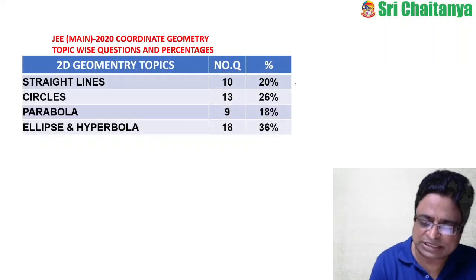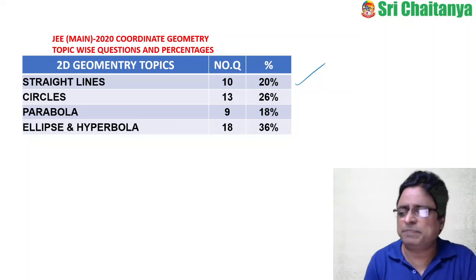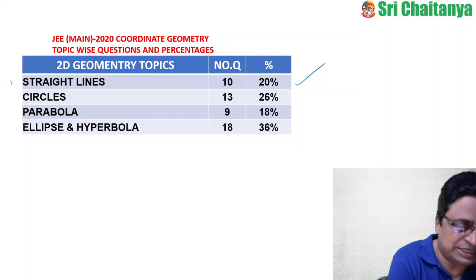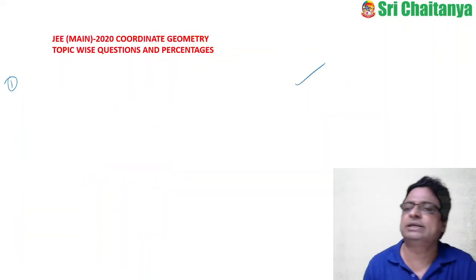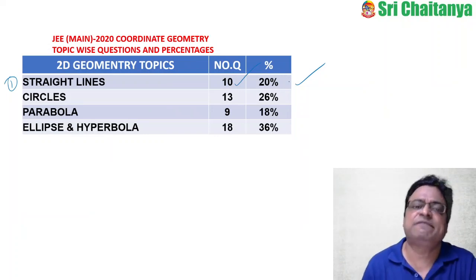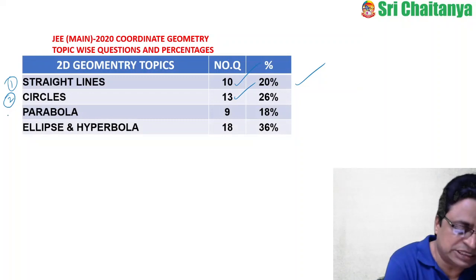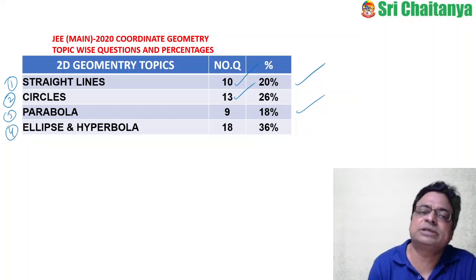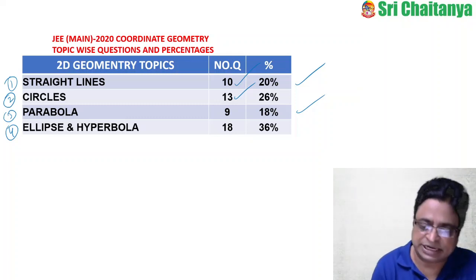In JEE Main 2020 coordinate geometry, the topic-wise analysis is as follows. Straight Lines — including coordinate system, locus, change of axis, and pair of straight lines — had 10 questions out of 50, which is 20%. Circles had 13 questions (26%). Parabola had 9 questions (18%). Ellipse and Hyperbola had 18 questions combined, which is 36%.